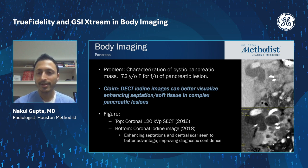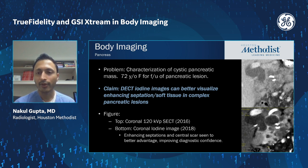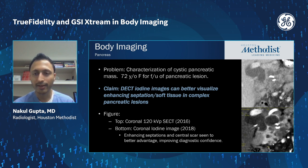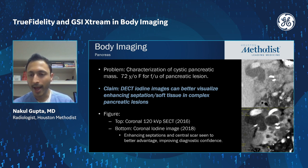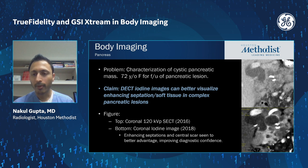The pancreas is another area where GSI can be tremendously helpful. This is a 72-year-old patient with a complex cystic lesion in the pancreatic head with a couple of calcifications on her prior single energy study — you can make out a few septations but it's hard to get a feel for the true complexity. On the iodine map from the dual energy study, you can see far more detail: the septations are much more clearly visible, as are the enhancing soft tissue elements.